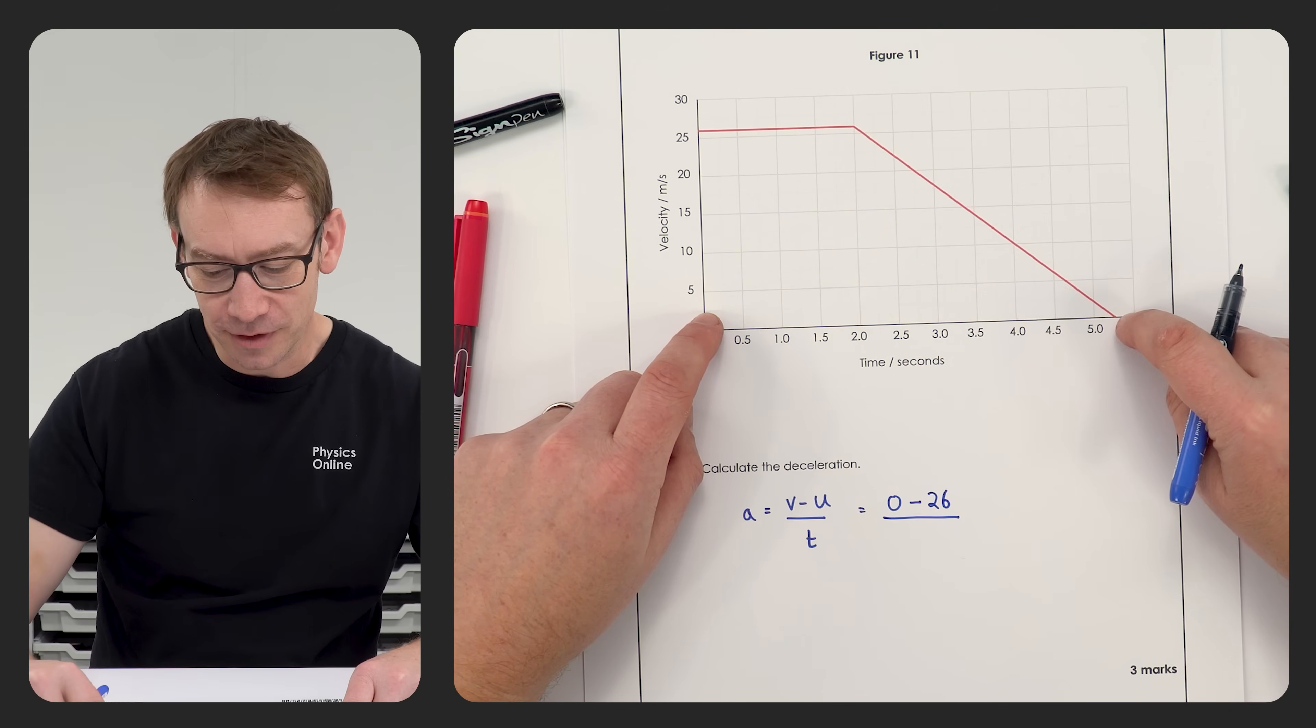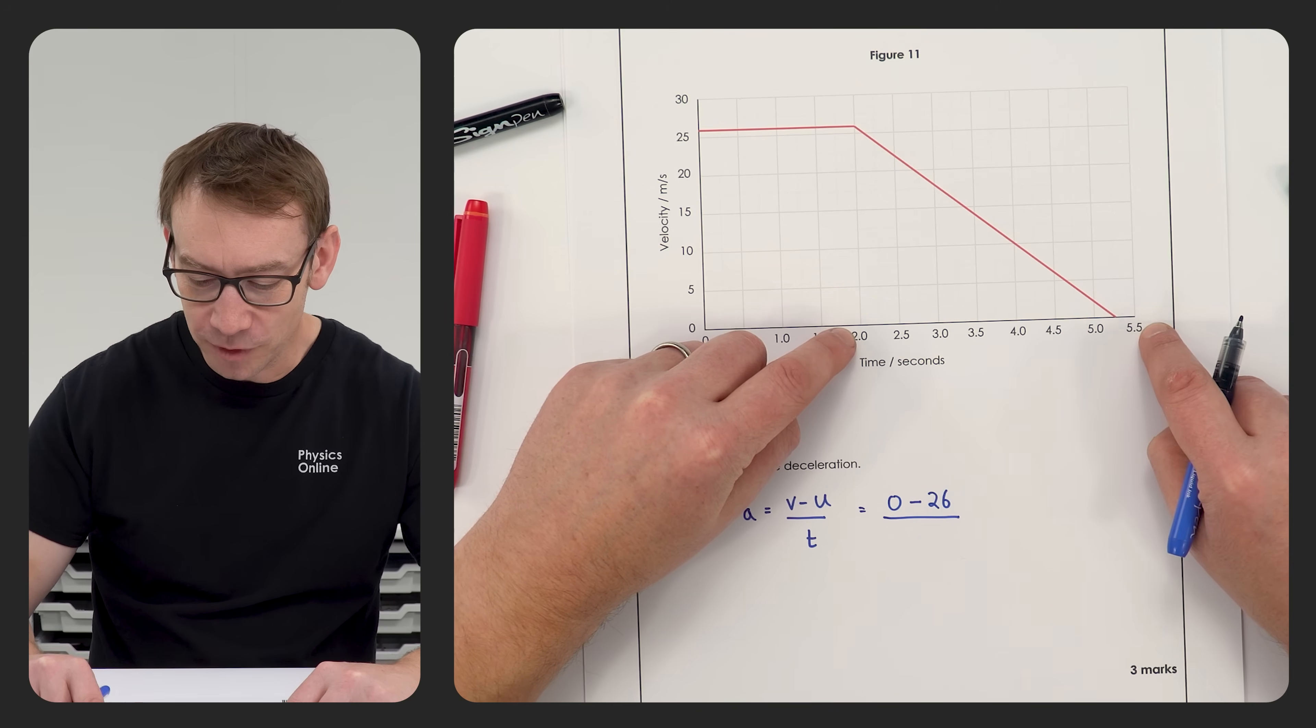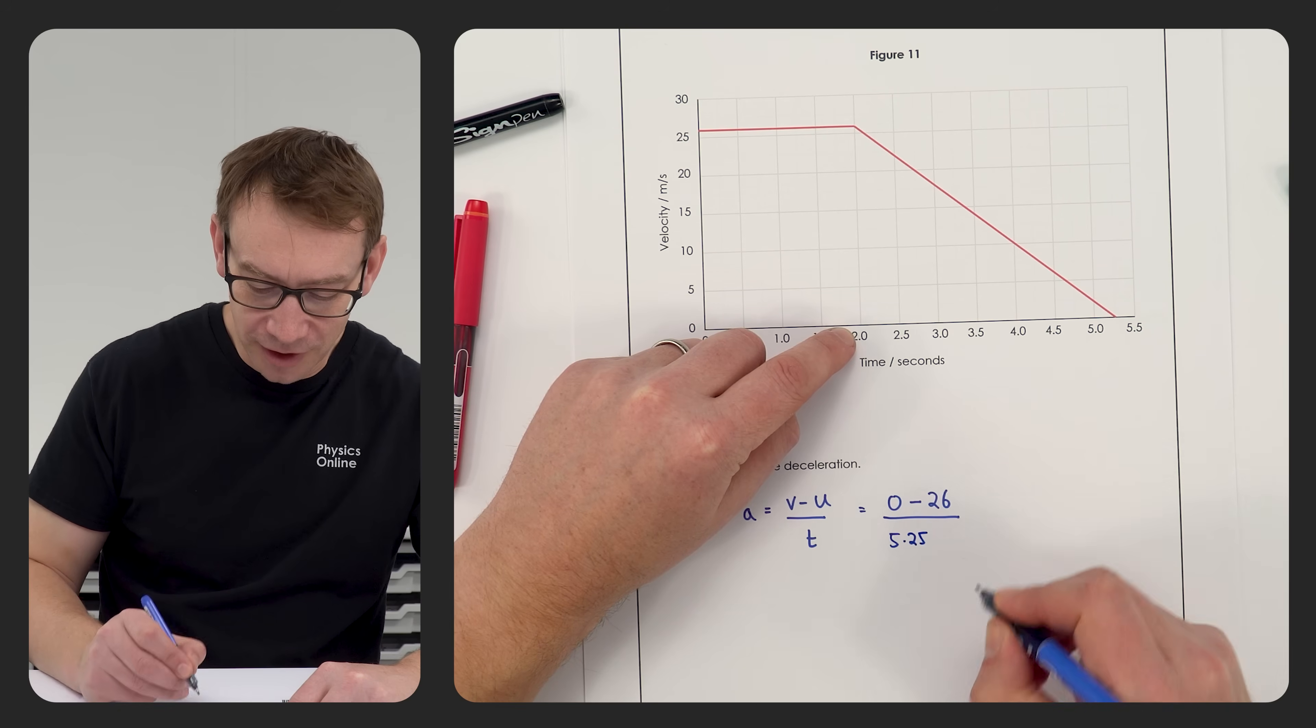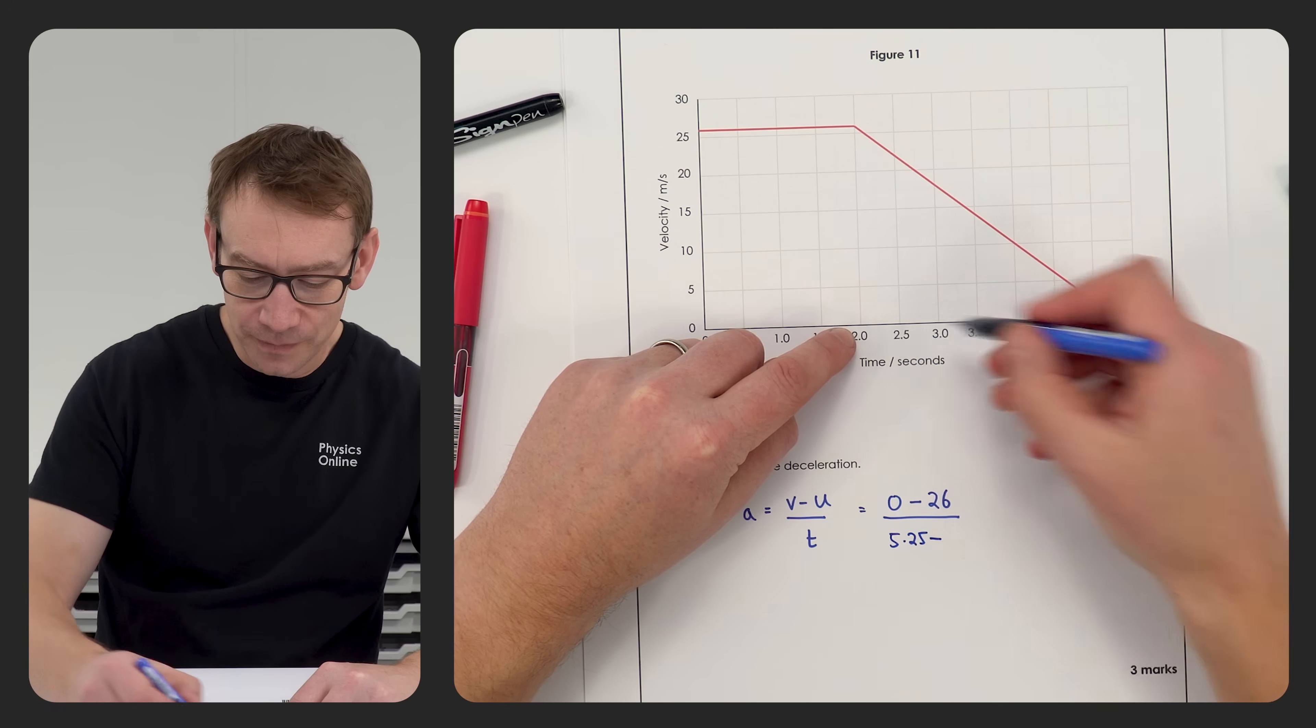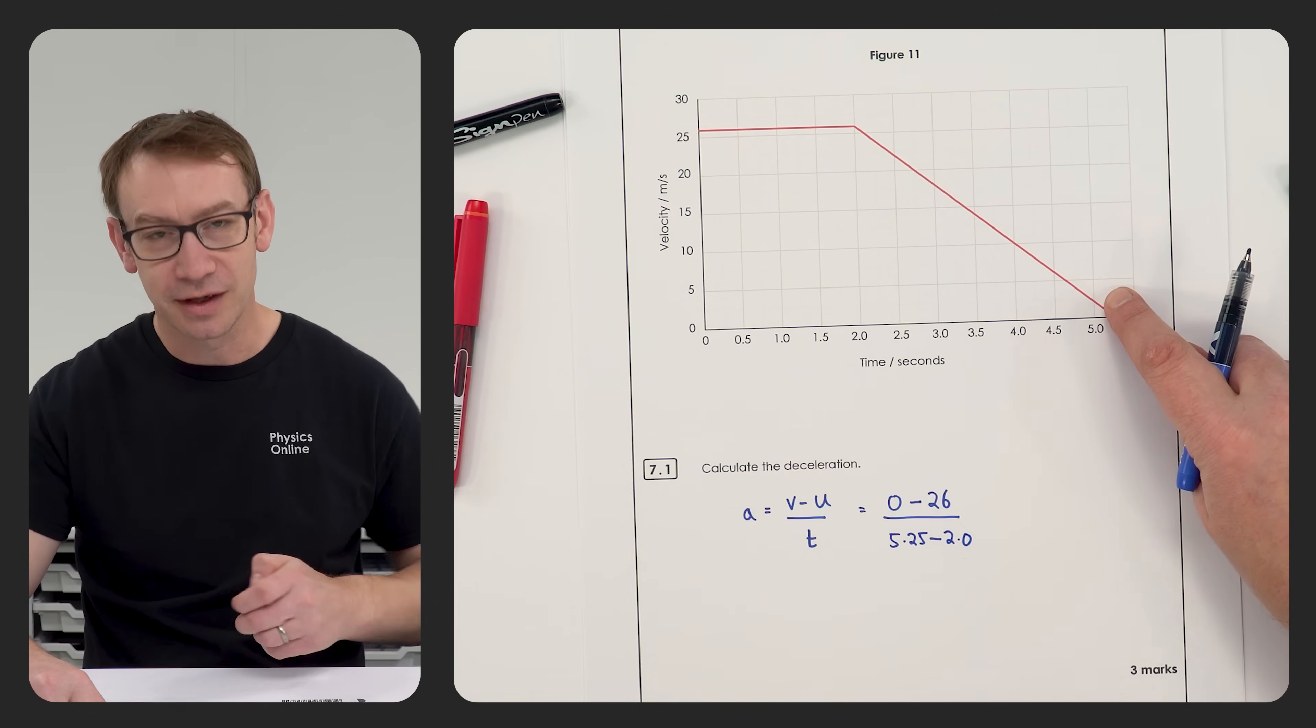And the time it took to go from 26 to zero was equal to, well it ends at between 5 and 5.5, so that's going to be equal to 5.25 seconds take away this one here which is 2.0. So it's just this part of the journey we're looking at.